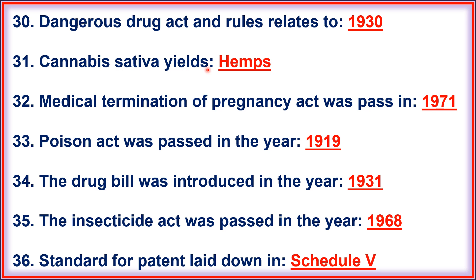31. Cannabis sativa yields hemp. 32. Medical Termination of Pregnancy Act was passed in 1971. 33. Poison Act was passed in the year 1919. 34. The Drug Bill was introduced in the year 1931. 35. The Insecticide Act was passed in 1968. 36. Standard for patent laid down in Schedule B.